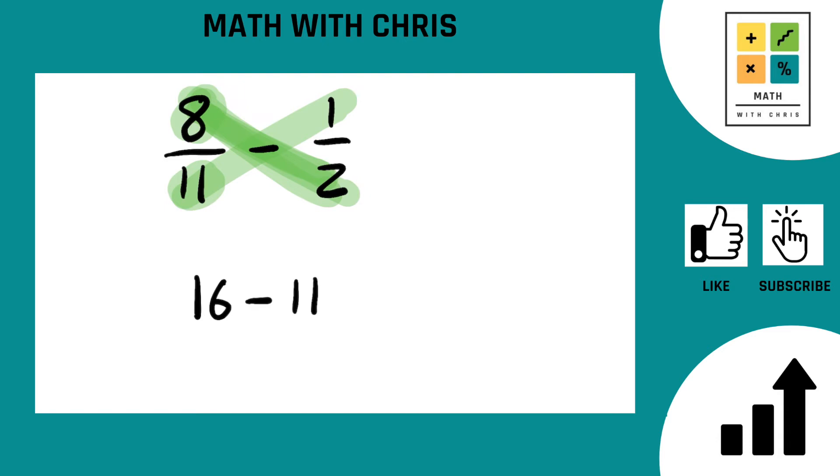That's going to be the top of our answer or the numerator. And the bottom of our answer or the denominator is going to be just multiply right across the bottom. 11 times 2 is of course 22.